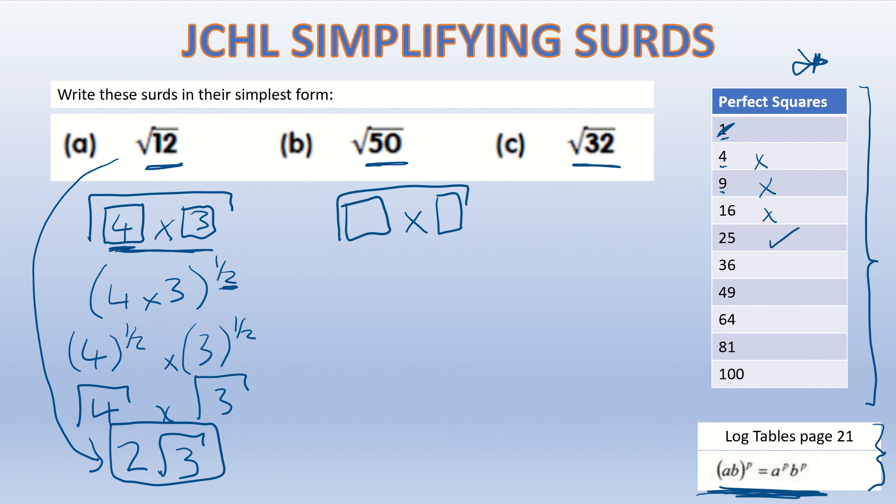Is 25 the biggest perfect square? Well, 36 doesn't, 49 doesn't, and after that you're above 50 so you can't get a number that goes in evenly. So 25 is the number. 25 multiplied by 2 will give me my original 50, and if I break that up I'm going to get root 25 times root 2.